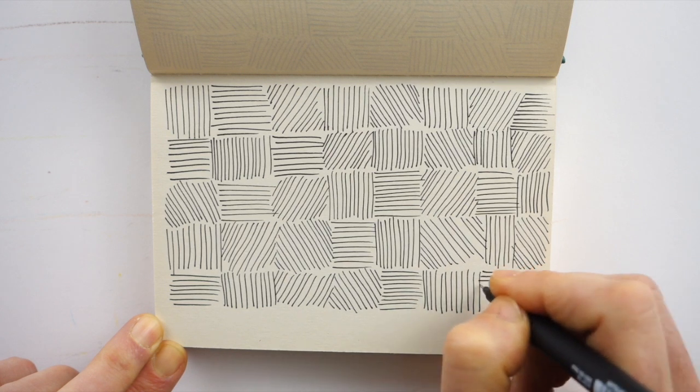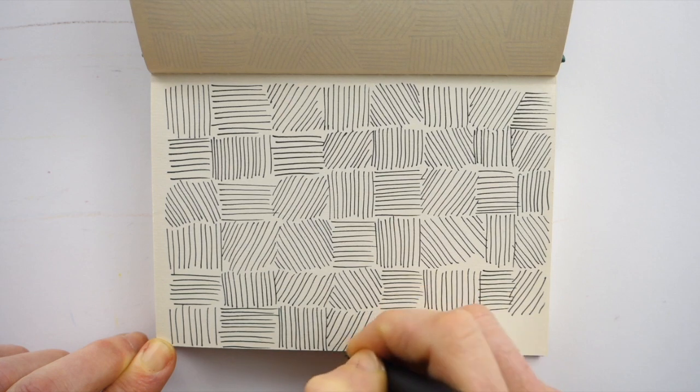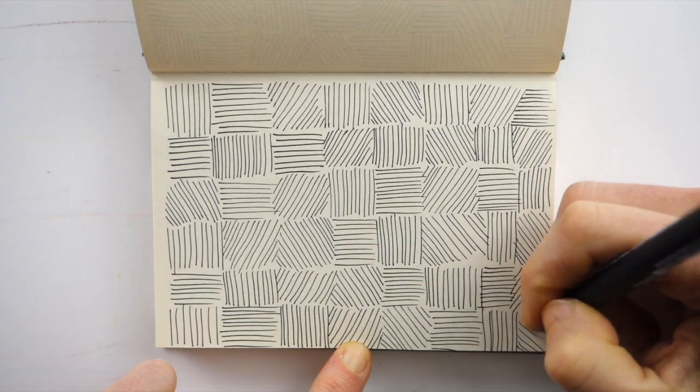And now that you know which directions seem to feel a little more fluid, you can benefit from that in any drawings where you'll use hatching for shading.